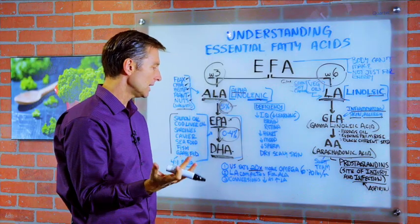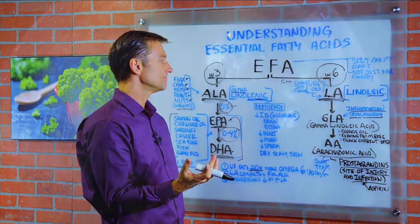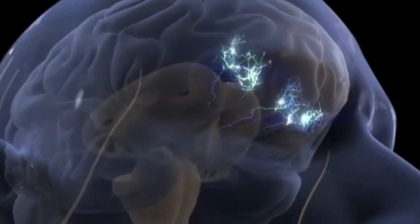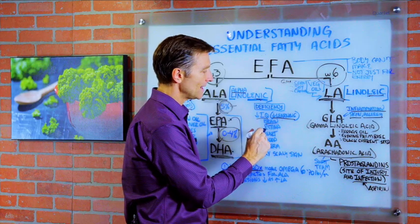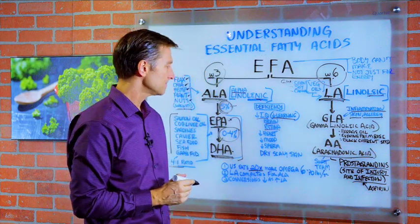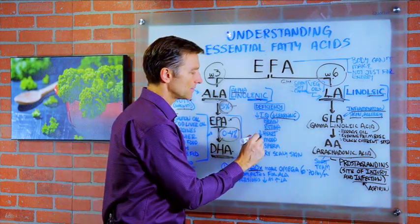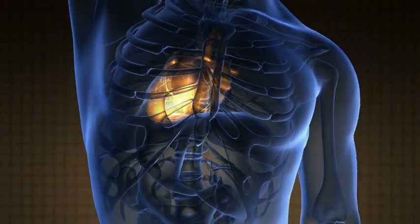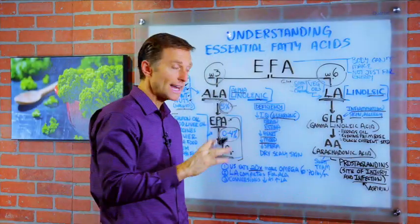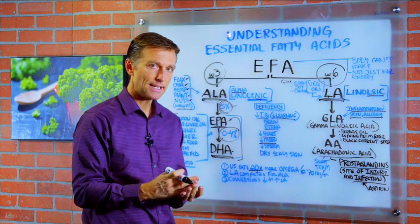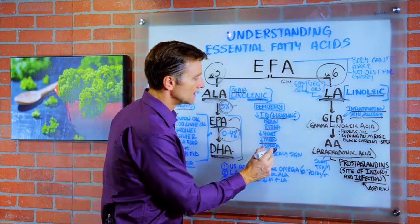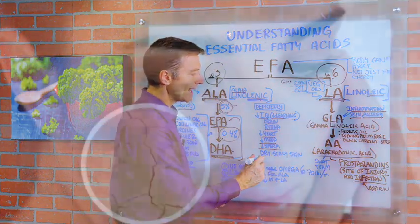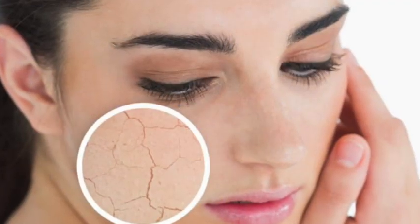What kind of symptoms will you get if you're deficient in omega-3? Your IQ goes down, you won't be able to learn, you'll have problems with brain and retina function, and you'll probably wear glasses. You're setting yourself up for heart problems, blood pressure problems, and inflammatory conditions of the heart. Your overall mood will go down, depression, anxiety, decreased sperm count, and a lot of skin issues — dry, scaly skin is a very common symptom.